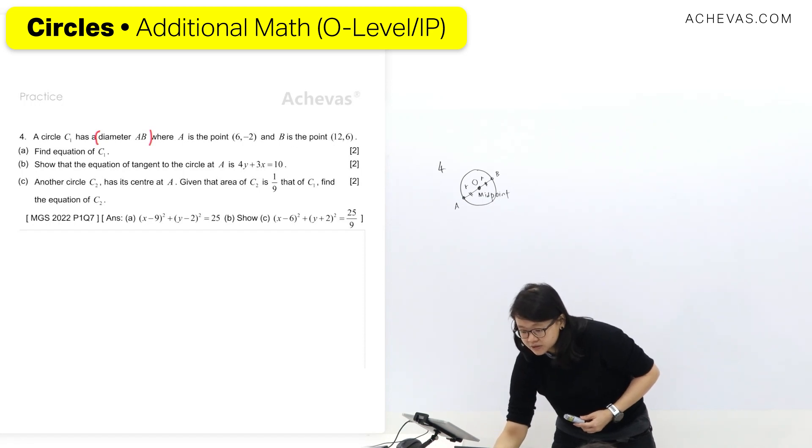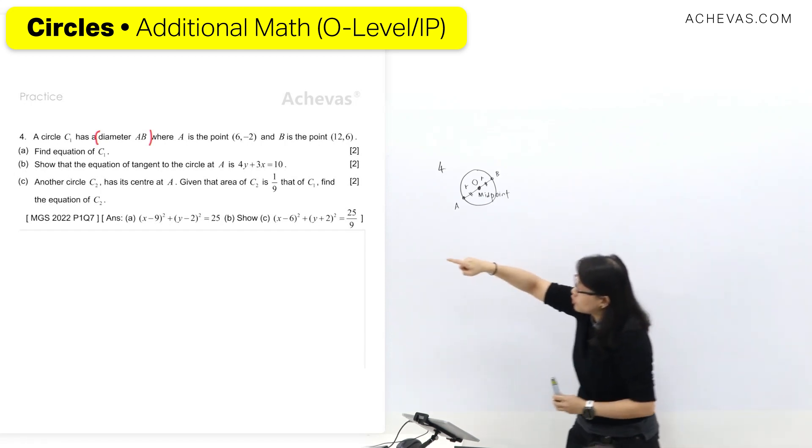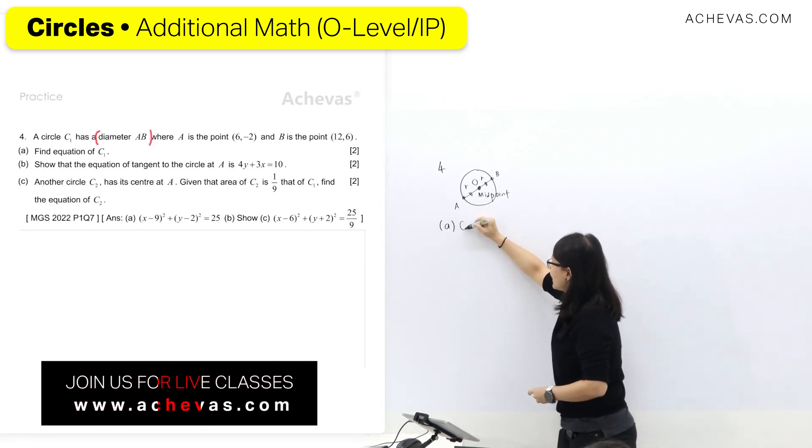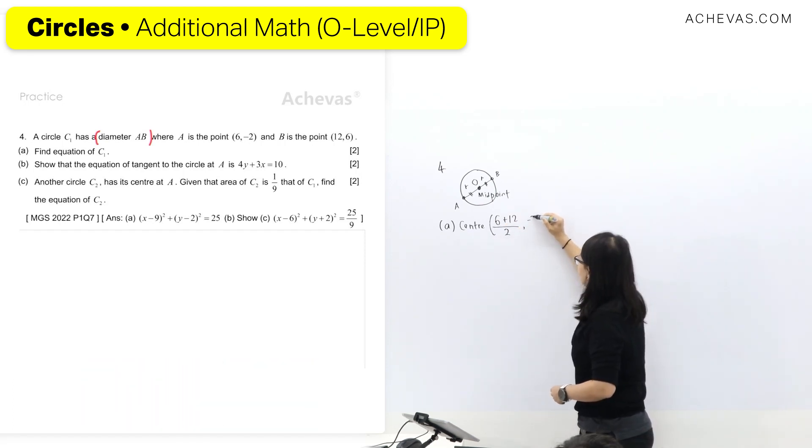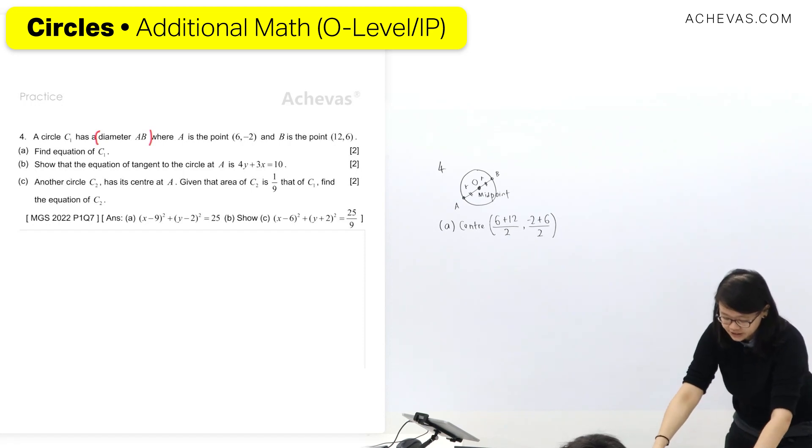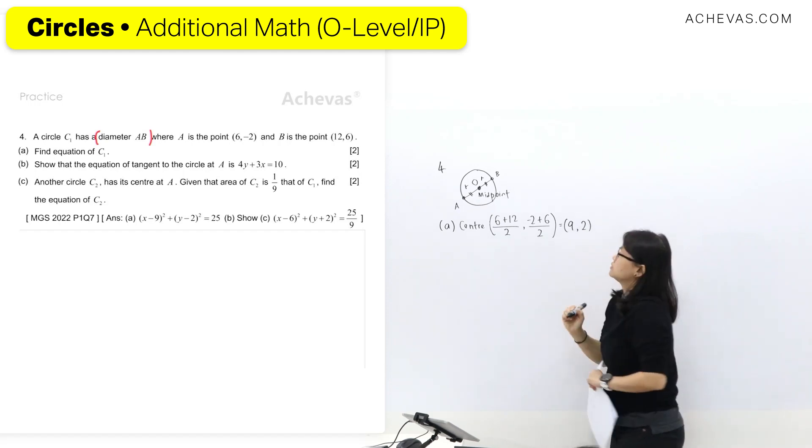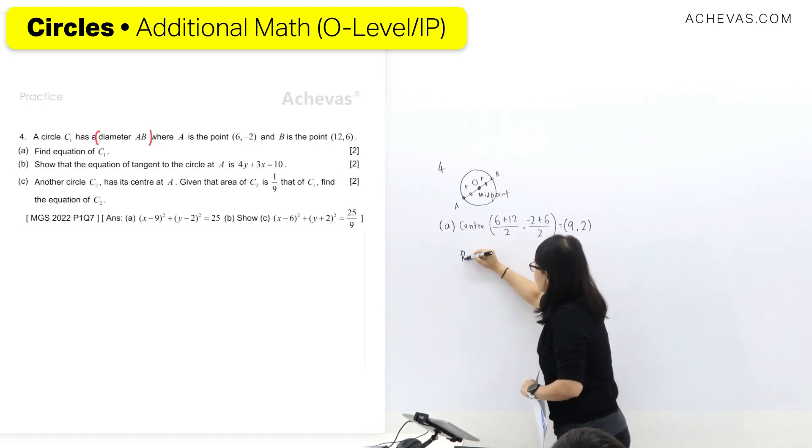So to find center, I do midpoint of A and B. A we have 6 plus 12 for the x position divided by 2, then y is negative 2 plus 6 divided by 2 as well. So the center here is 9 and 2. For radius, up to you, we can do point O to A or O to B. Let me just find radius here.